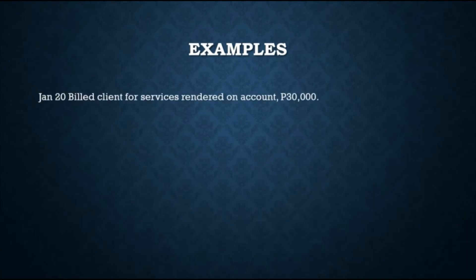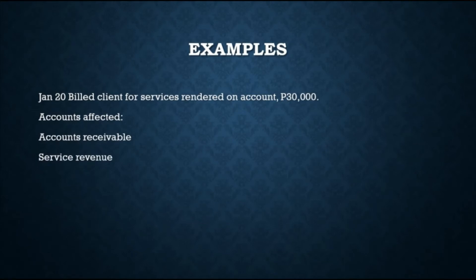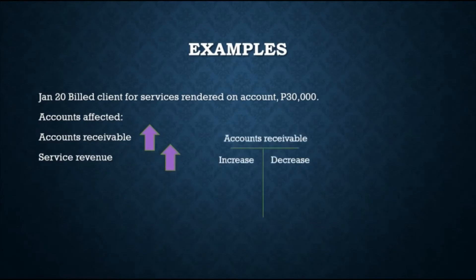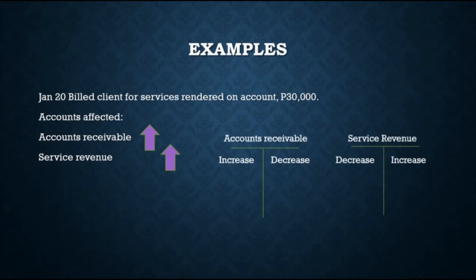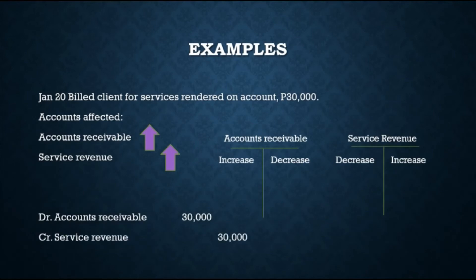For the transaction on January 20, the client was billed for services rendered on account amounting to $30,000. The accounts affected are accounts receivable and service revenue, since services were rendered but payment has not necessarily been collected yet. Both accounts receivable and service revenue will increase. Since accounts receivable is an asset that increased, it goes on the debit side. Since service revenue increased, it goes on the credit side. The journal entry is: debit Accounts Receivable $30,000 and credit Service Revenue $30,000.